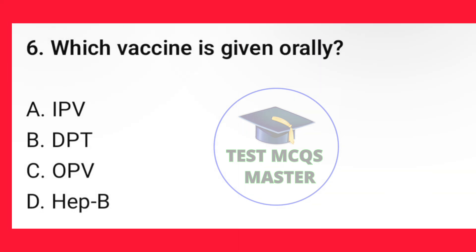Question number 6. Which vaccine is given orally? The correct option is C — OPV.